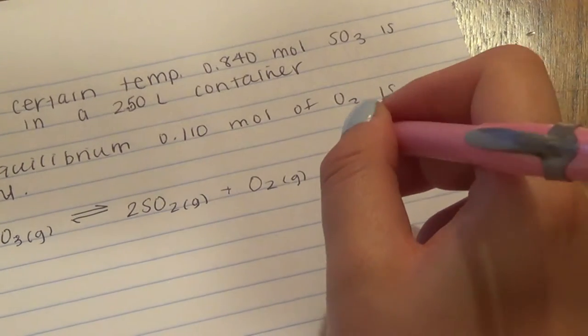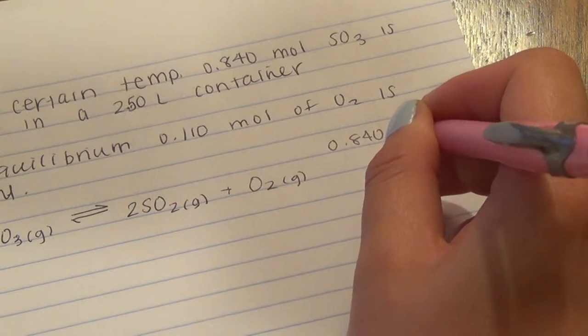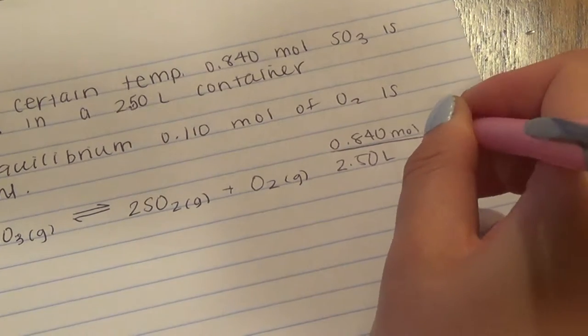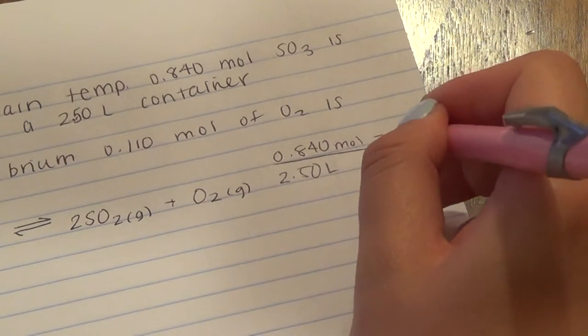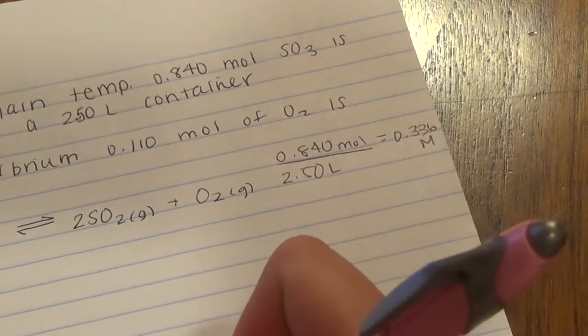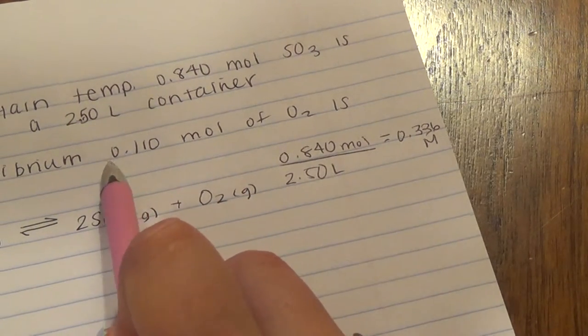we'll do it off to the side. 0.840 moles divided by 2.50 liters gives us 0.336 molarity. And the same with this moles of O2.